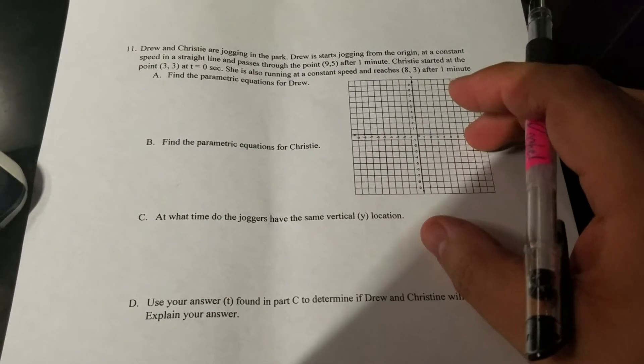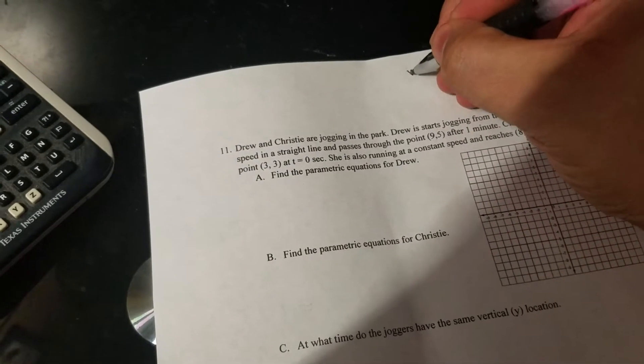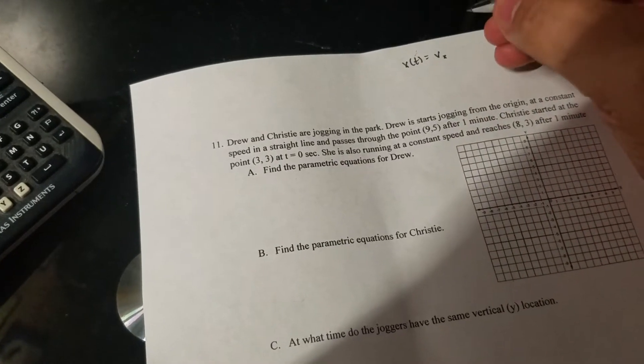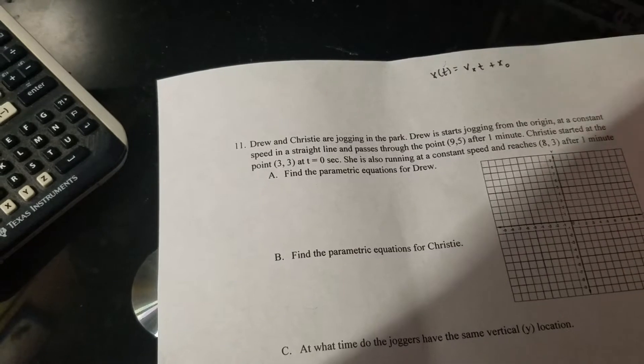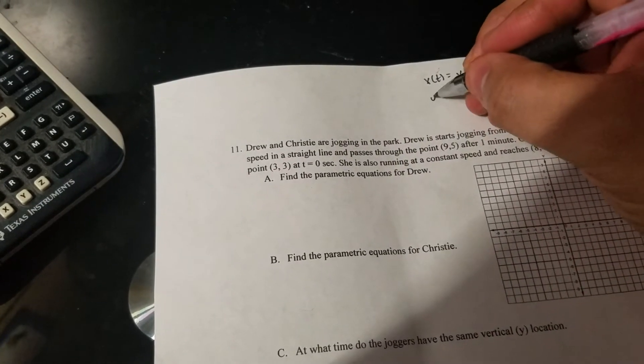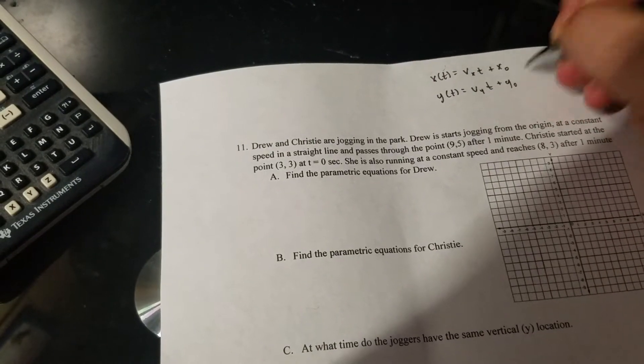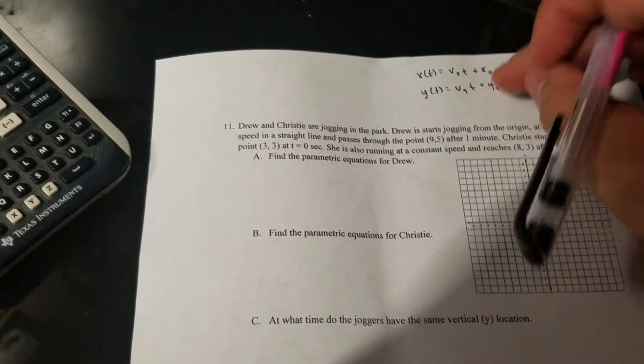So this is asking for parametric equations and we need to remember our parametric equation is in the x direction I have my velocity in the x times t plus the x initial. And pretty much the same thing for y, but now I'm dealing just with the y, so how far am I moving up and down and what is where did I start?